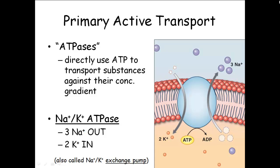What you end up with is a high concentration of sodium in the extracellular fluid, so sodium would want to diffuse back in. And in the intracellular fluid, you end up with a high concentration of potassium. The way your muscle cells and nerve cells work is based on this right here. Your nerve cells and muscle cells are what are called electrically excitable — they use electrical signals, they use this charge difference in order to transmit information.